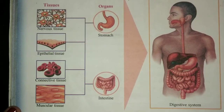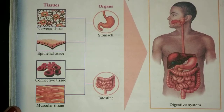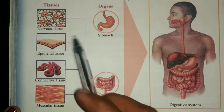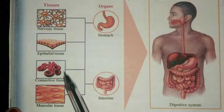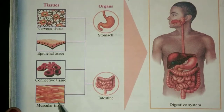Here, you can see different types of tissues in the picture. The tissues shown here are: nervous tissue, epithelial tissue, connective tissue, and muscular tissue. In the last class, we studied the function of each tissue.